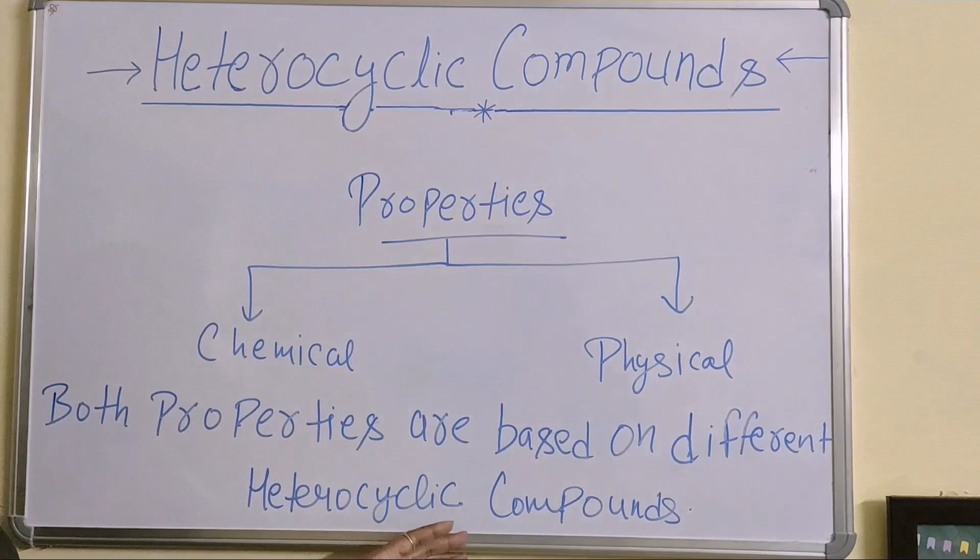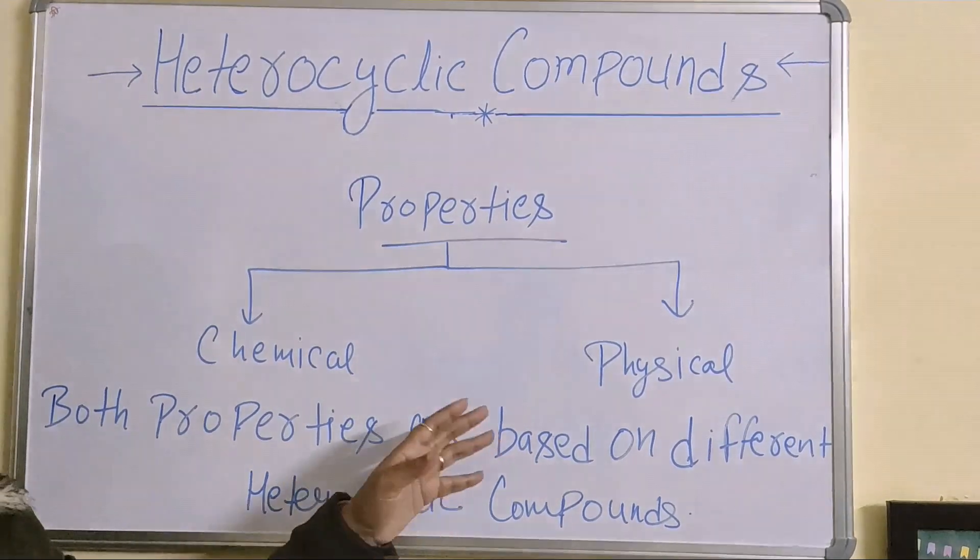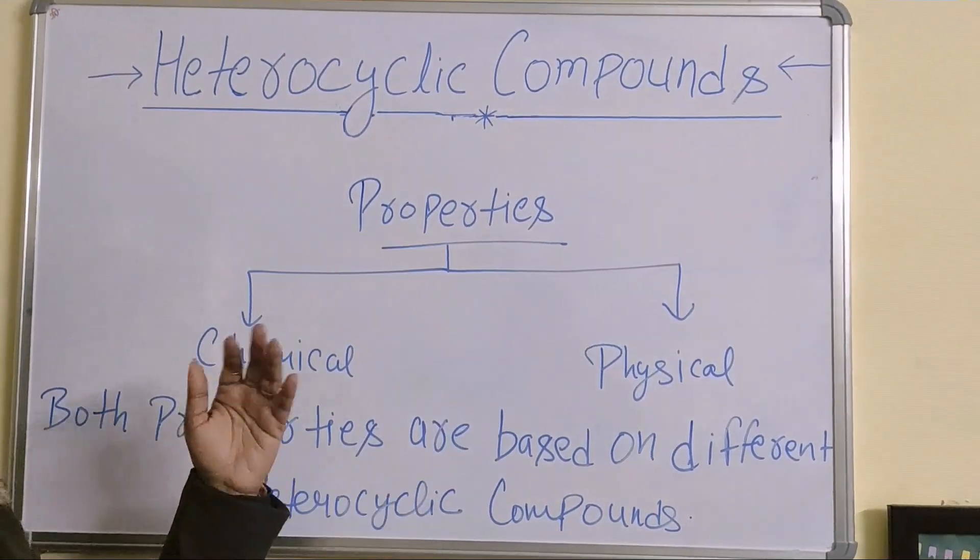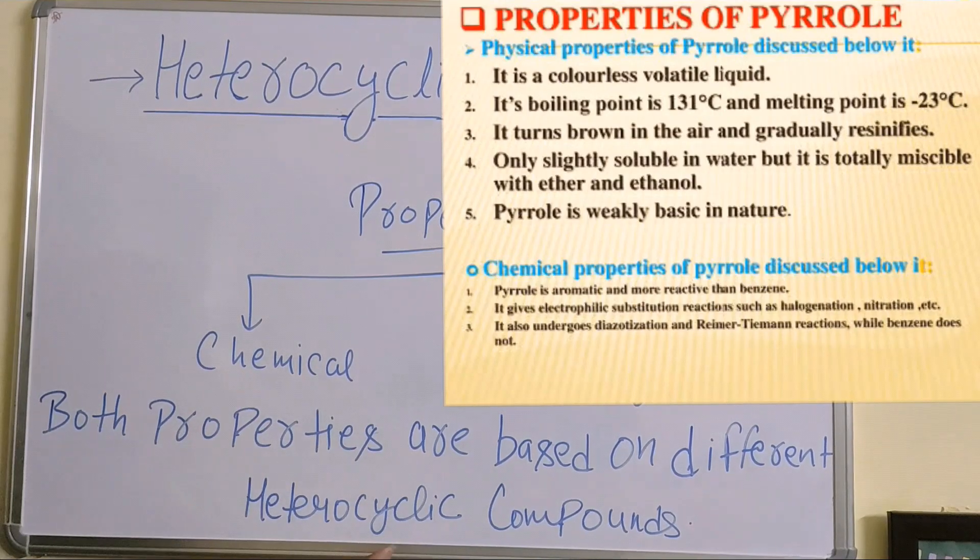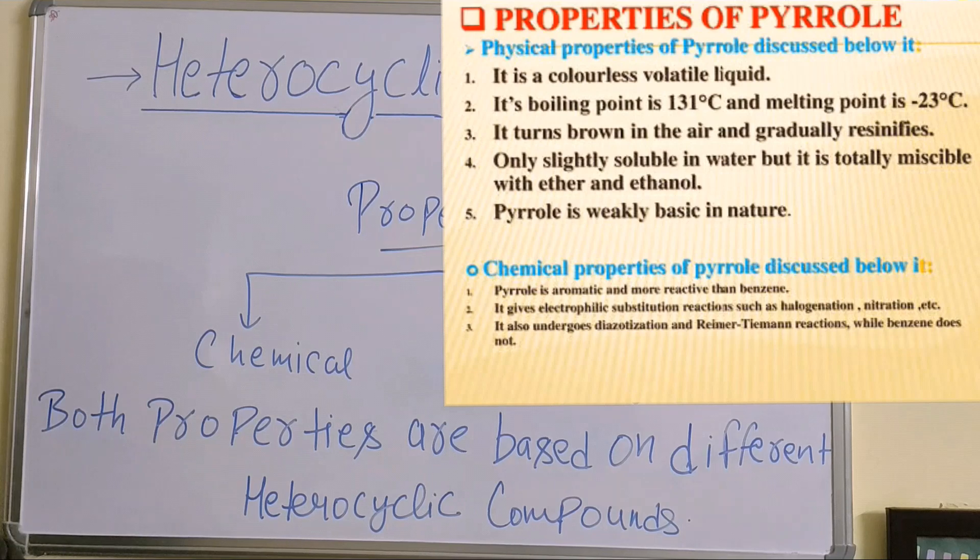For example, if we talk about any heterocyclic compound, we talk about pyrrole, then any physical property such as melting point, boiling point, the compound according will be different. If we talk about furan, then it will be something else.